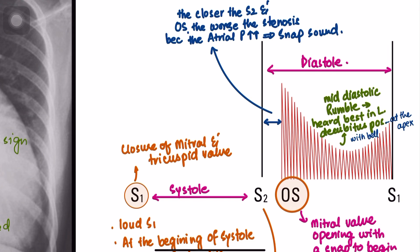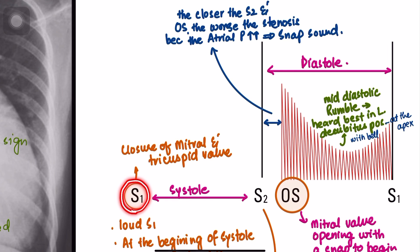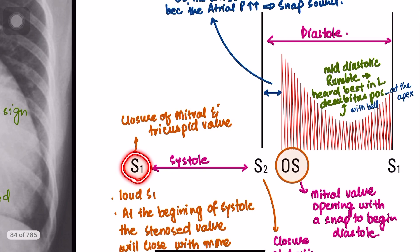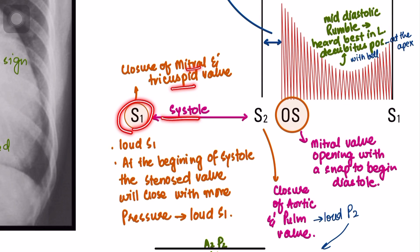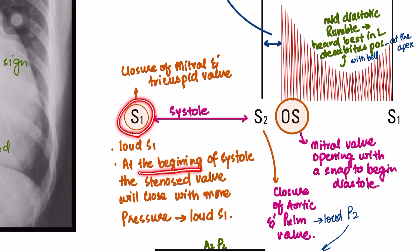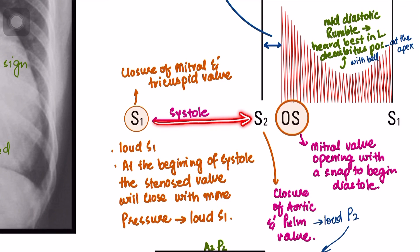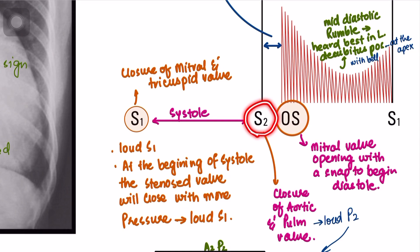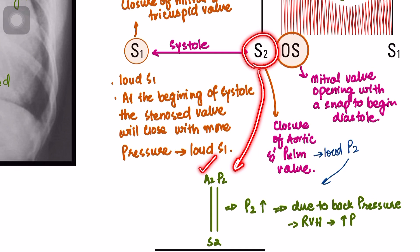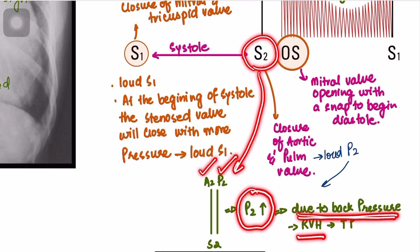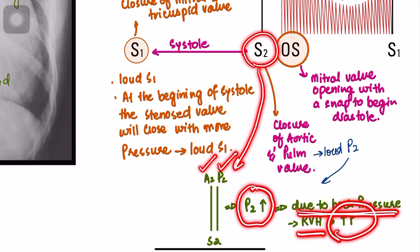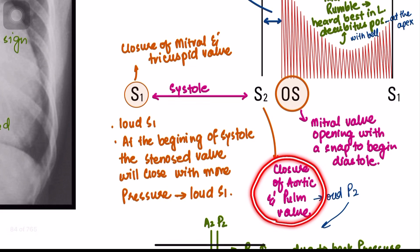On physical examination, S1 will be loud because at the beginning of systole the stenosed valve closes with more pressure. After systole, closure of the aortic and pulmonary valves produces S2, which has an A2 and P2 component. The P2 component will be increased in volume because back pressure causes right ventricular hypertrophy, resulting in a louder P2 sound.